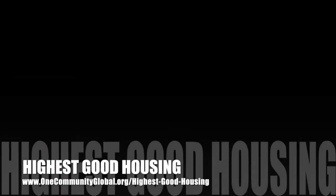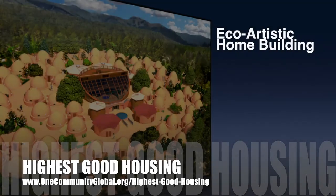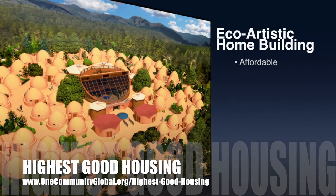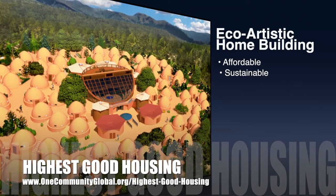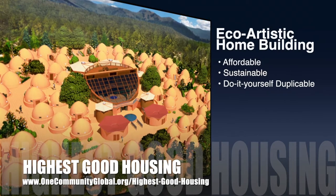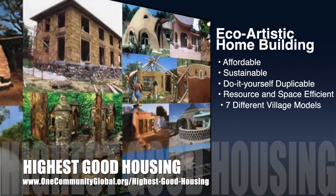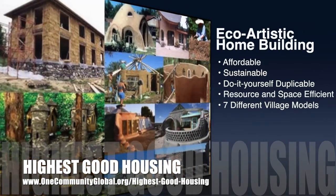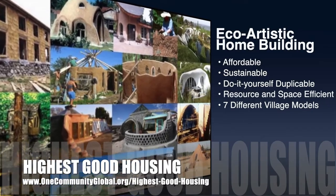The One Community approach to highest good housing is eco-artistic home building that is affordable, sustainable, do-it-yourself duplicable, resource and space efficient, and consists of seven different sustainably constructed village models.